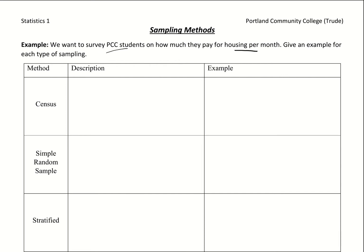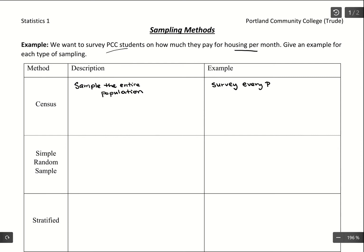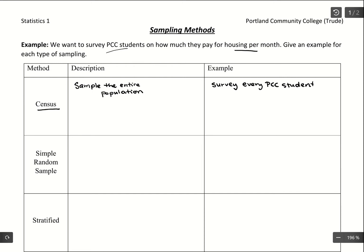Starting off with a census — this is where we sample the entire population. So if we were collecting data about housing per month for PCC students, this is where we would survey every PCC student. This gets at the idea of population data. To get population data we'd have to run a census, which most of the time is very difficult to obtain. It often takes a lot of time and money. It's very difficult to accomplish, but if we got this data it would be very accurate.